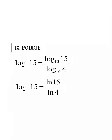Each expression gives approximately 1.46, regardless of whether you use log or natural log. For our next example, log base 4 of 15: the value 15 goes to the numerator and the base 4 goes to the denominator. Using log: log base 10 of 15 divided by log base 10 of 4. Using natural log: natural log of 15 divided by natural log of 4. Both give the same answer — approximately 1.95.